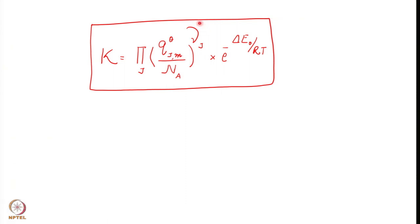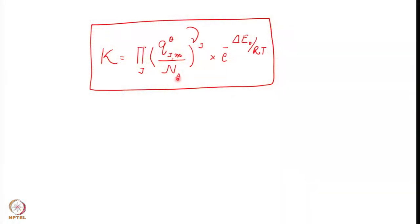Re-emphasizing: the stoichiometric number is positive for products and negative for reactants. Going back to classical thermodynamics, the equilibrium constant is a dimensionless quantity. If you examine each term, you will see that the units cancel out, making K dimensionless. In classical thermodynamics, equilibrium constant was expressed as the ratio of activities of products and reactants. Here, the N_A included within the bracketed term — raised to whatever stoichiometric number — makes the entire expression a dimensionless quantity.